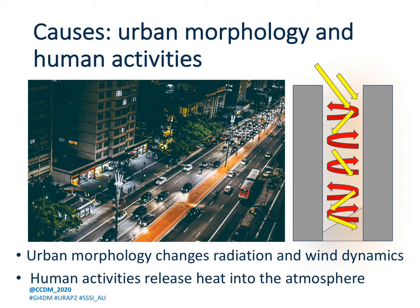Second, urban morphology changes local radiation and wind dynamics. Urban street canyons increase local temperature — the impervious surfaces of urban canyons absorb incoming shortwave radiation and re-emit longwave radiation. Rather than escaping back to space, the longwave radiation is bounced off the sides of the urban canyon, which then raises the local temperature. Urban structures also block wind, which typically cools off a city. Lastly, human activities release heat into the atmosphere — for instance, heat is released by both air conditioning and vehicle exhaust.